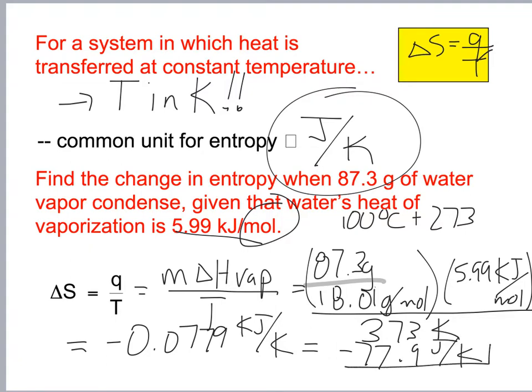You might ask where the negative came from — we're condensing the water, going from vapor to liquid, which is negative delta S because it's getting more ordered. We're taking away entropy. You have to know how delta S is applied.